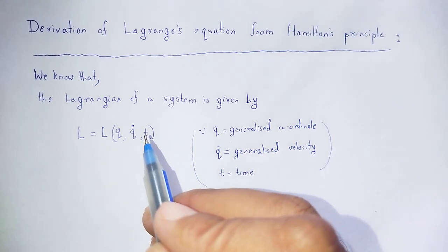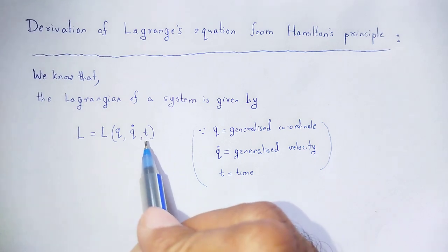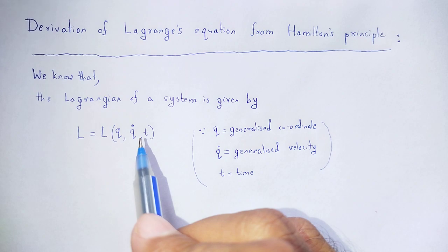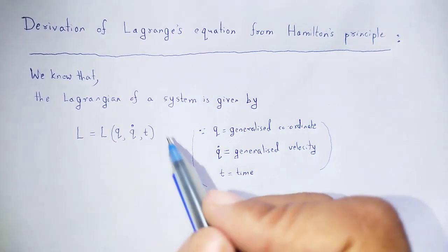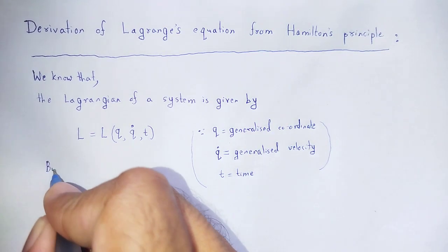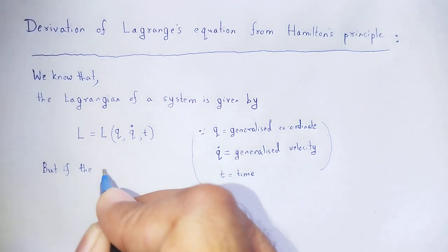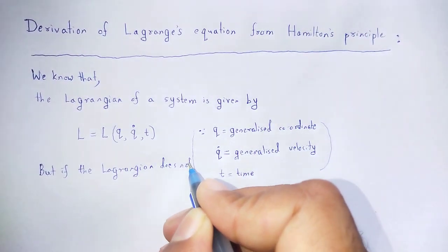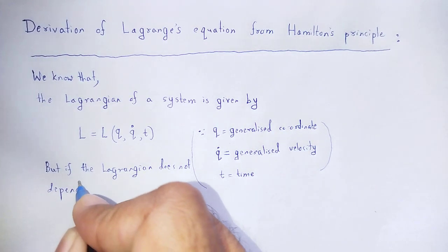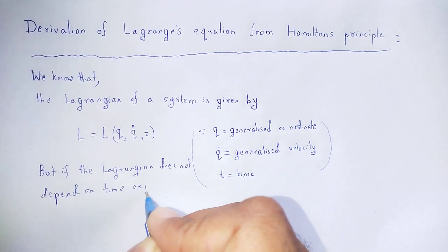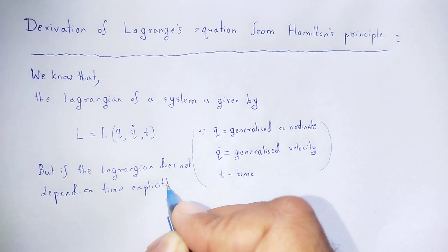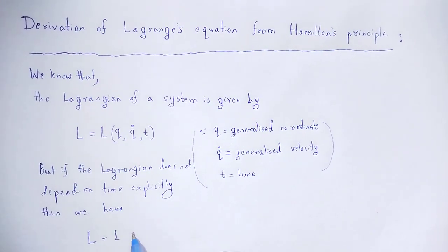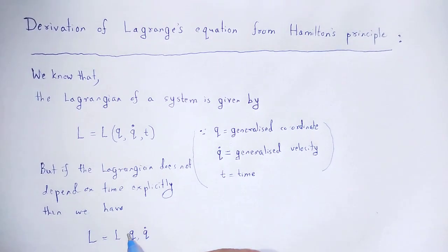The Lagrangian depends on the generalized coordinate q and time t. But if the Lagrangian does not depend on time explicitly, then we have only that the Lagrangian depends upon the generalized coordinate and its generalized velocity.